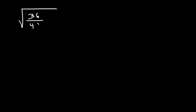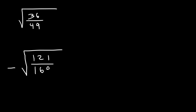What is the square root of 36 divided by 49? And also negative root 121 over 169. The square root of 36 is 6, and the square root of 49 is 7. That's all you need to do for this one. The square root of 121 is 11, and the square root of 169 is 13.